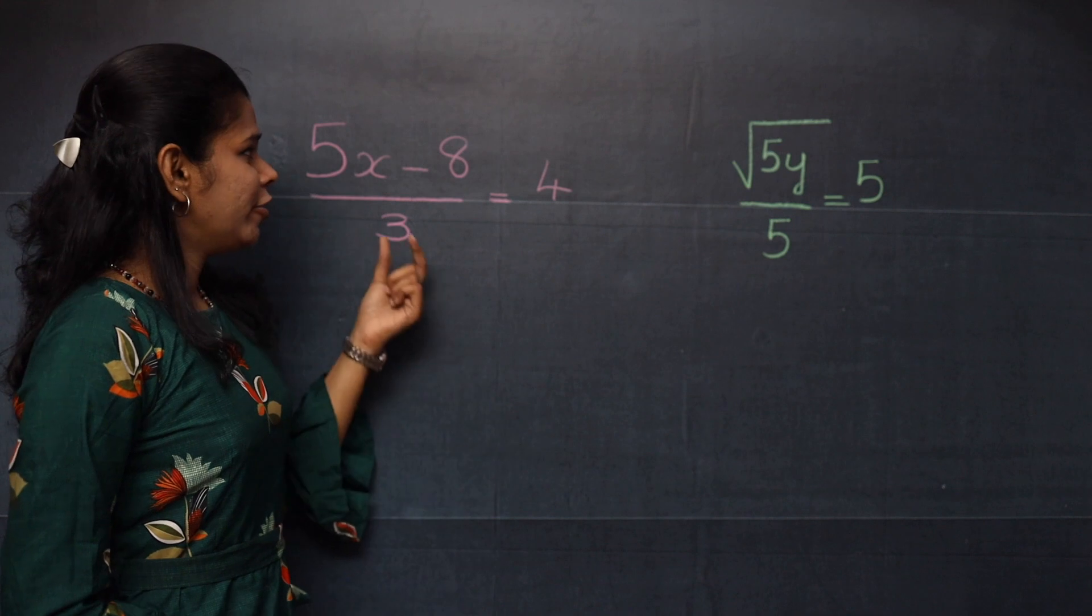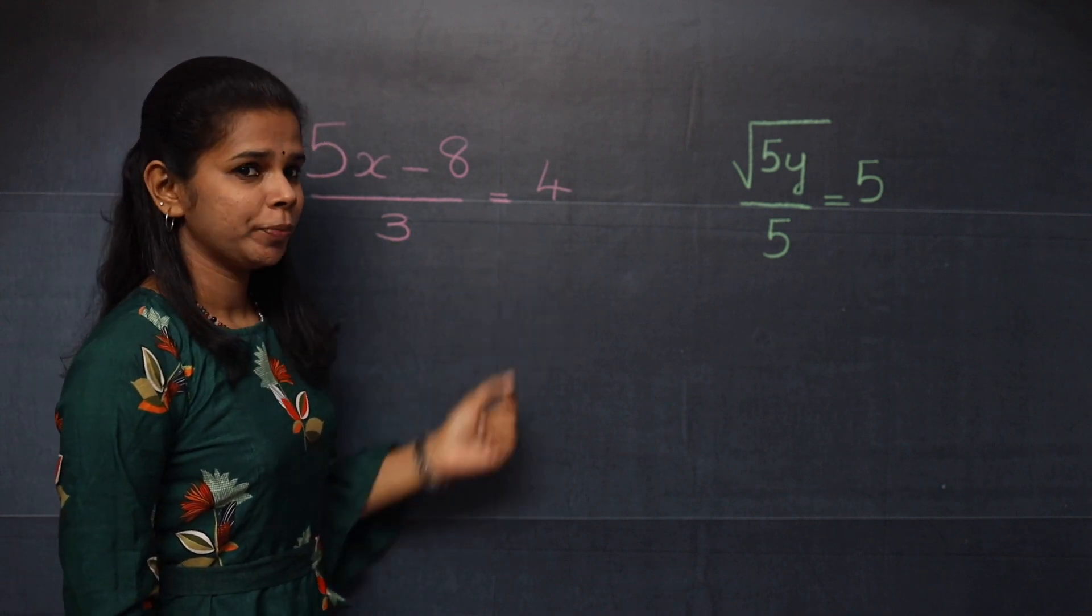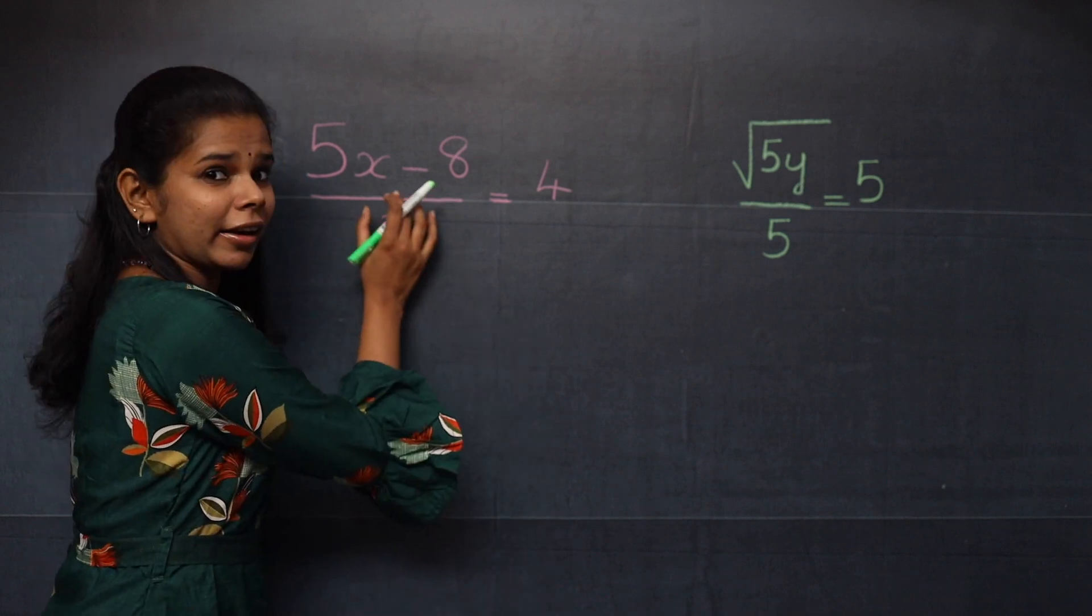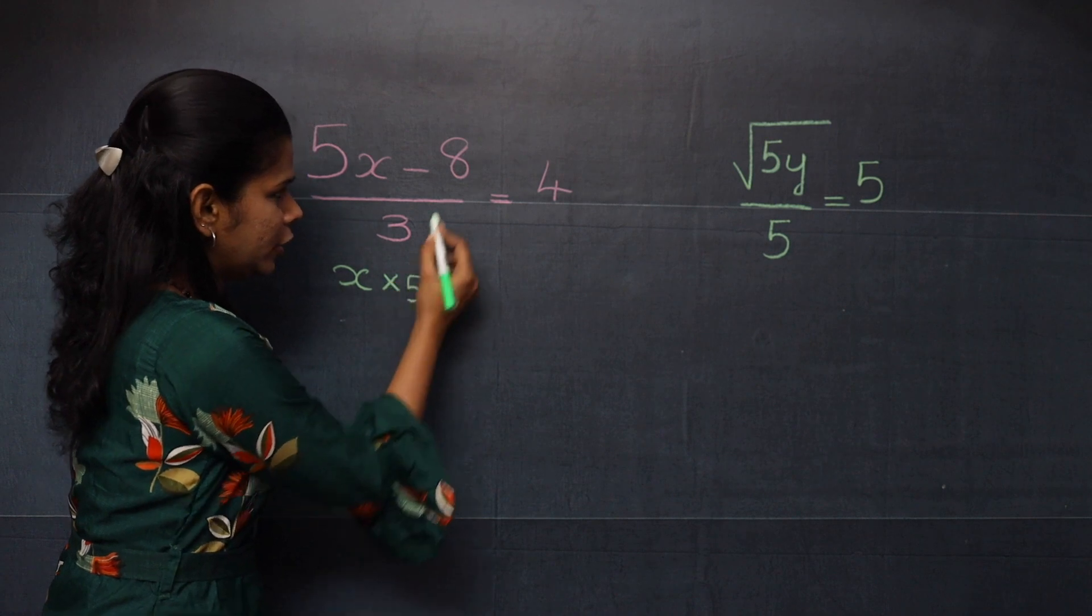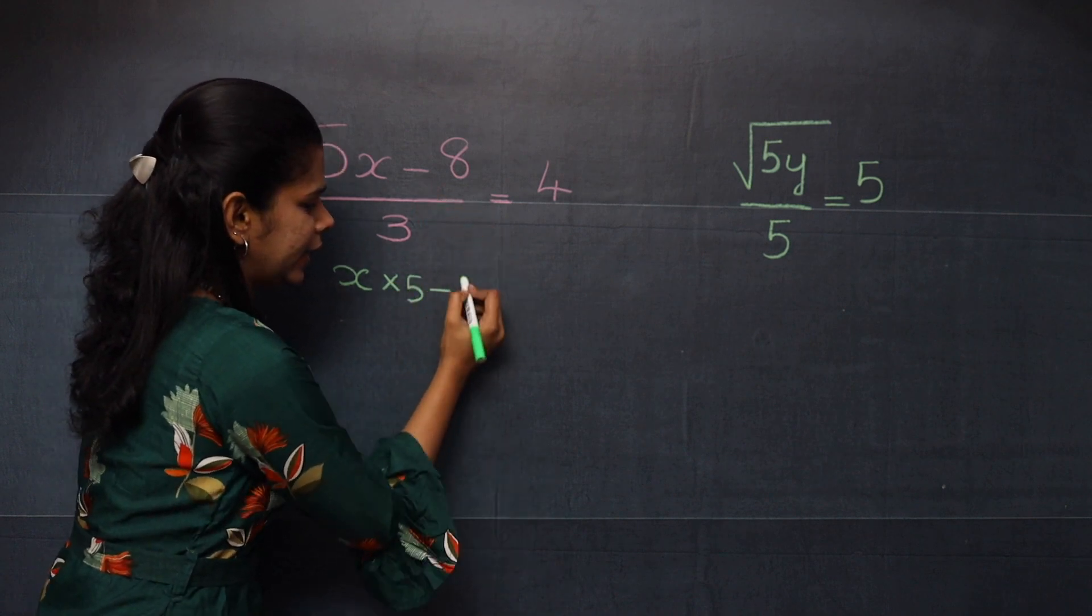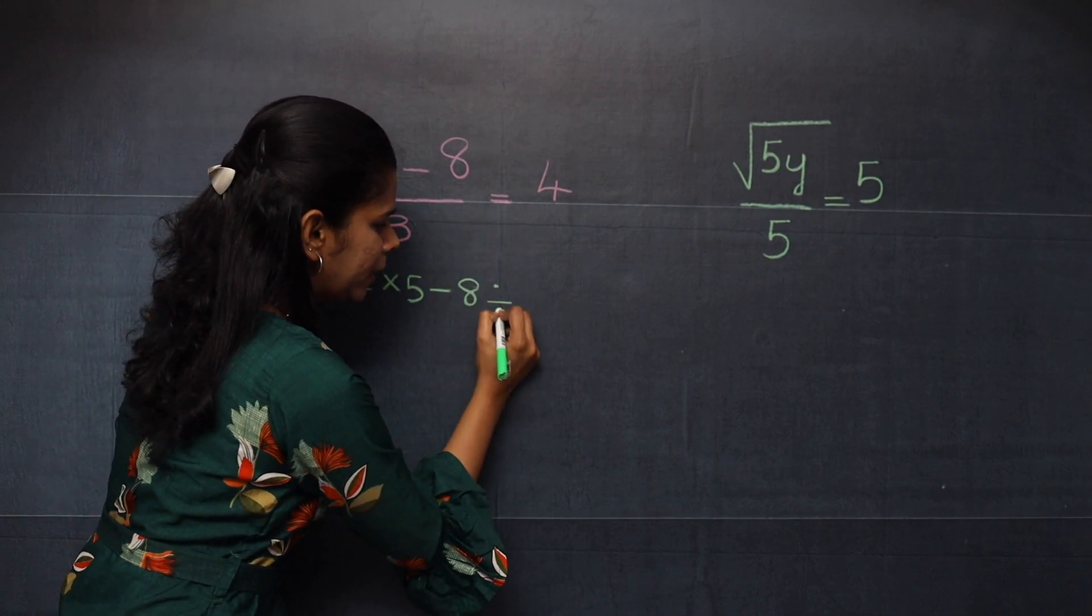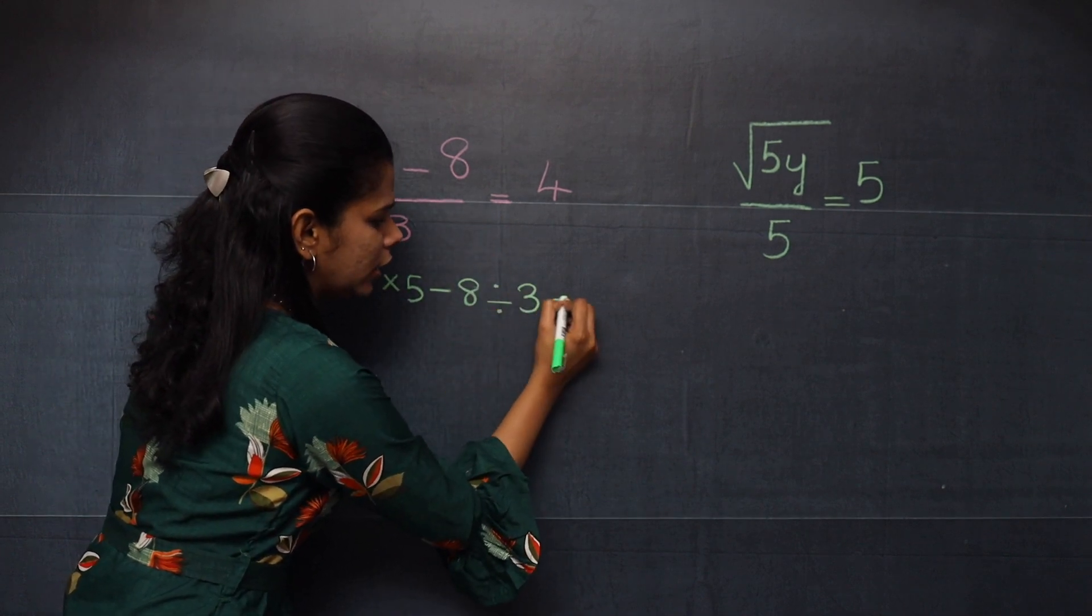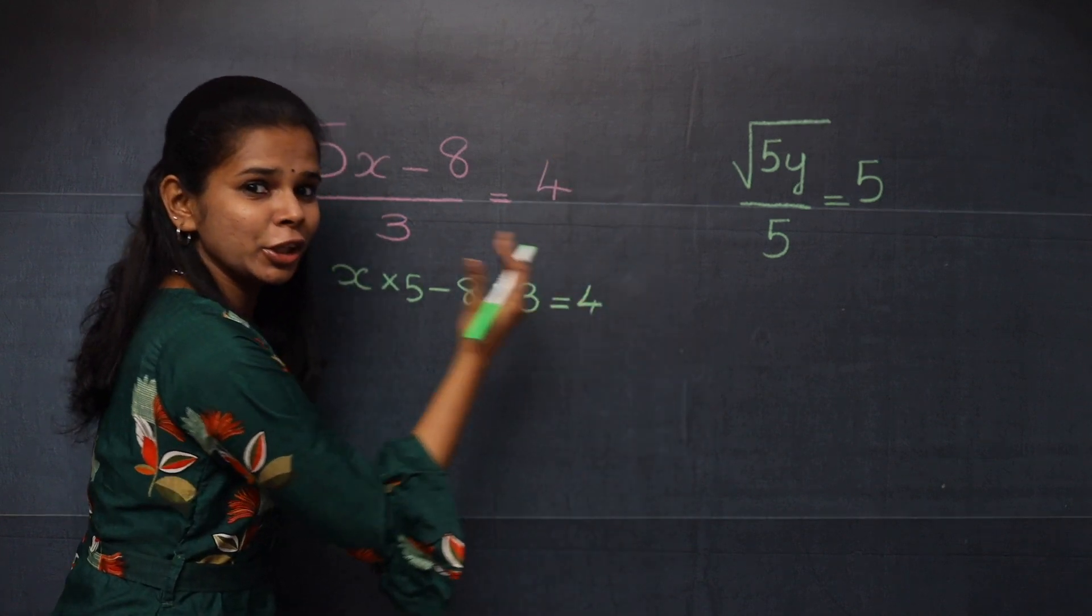Moving on to the next question. 5h minus 8 divided by 3 equal to 4. First you will write h into 5. And then you have minus, then 8, then you have divided by. So you will put a division symbol and then 3 equal to 4. Now you will start from right to left.